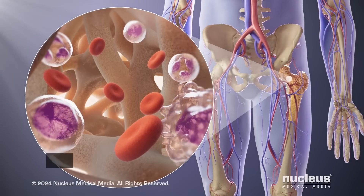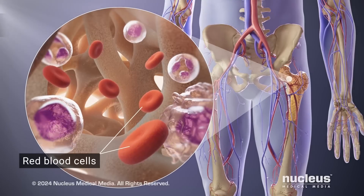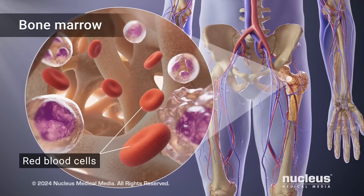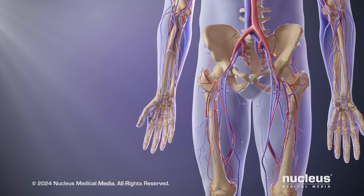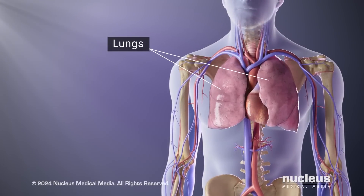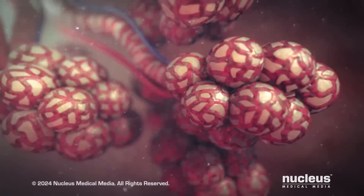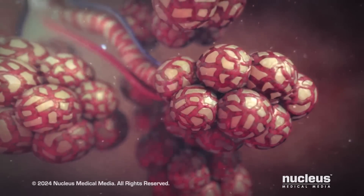Most of the cells in your blood are called red blood cells. They are made in your bone marrow, which is the tissue in the center of your bones. From there, they travel to your lungs, where they pick up oxygen from the air you breathe in. This happens in tiny air sacs in your lungs, called alveoli.